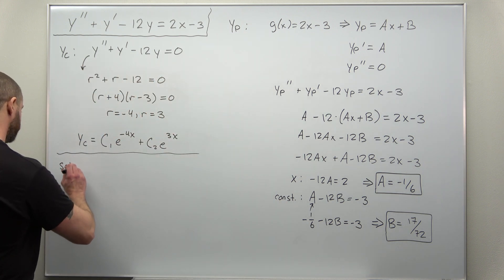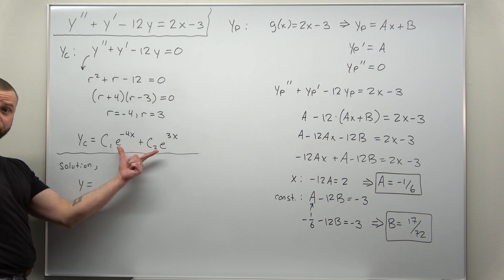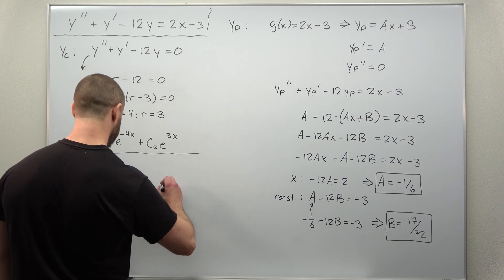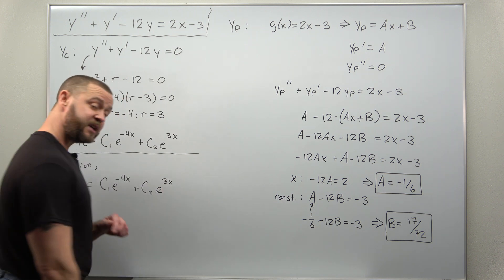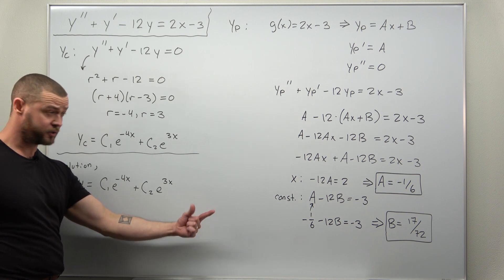Our solution looks like the complementary solution, c1 e to the negative 4x plus c2 times e to the 3x. And then we add to the complementary solution the particular solution.